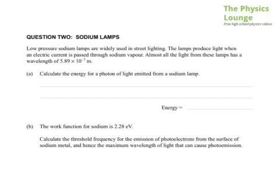Calculate the energy of a photon of light emitted from a sodium lamp. So the energy of a photon of light is given by H, Planck's constant, times the frequency. If you don't have the frequency, you can use V equals F lambda to find the frequency from the wavelength. That's what we have, we have the wavelength.